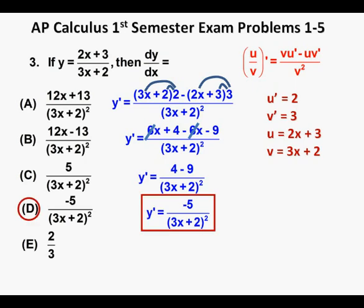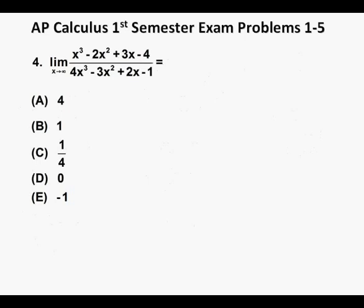Problem 4. The limit as x approaches infinity of x cubed minus 2x squared plus 3x minus 4 over 4x cubed minus 3x squared plus 2x minus 1 equals. And we have five answer choices lettered a through e.